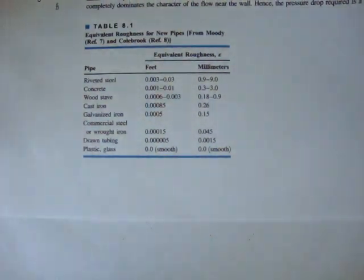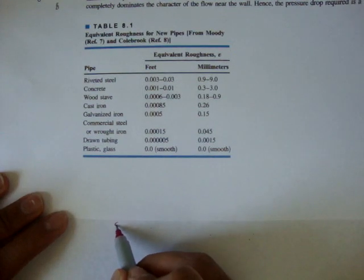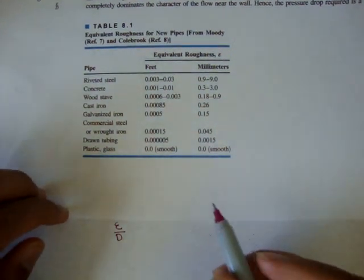In the last video, we introduced something called the relative roughness of a pipe, of a new pipe. And the relative roughness was epsilon over diameter.